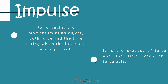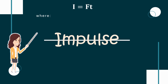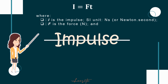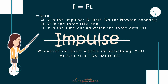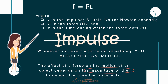Mathematically, impulse is I equals F multiplied by time, where I is the impulse with SI unit of Newton-seconds, F is the force in Newtons, and T is the time during which the force acts in seconds. When you exert a force on something, you also exert an impulse. The stronger the force, the greater the effect. The longer the time the force acts, the greater the effect.